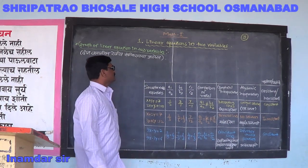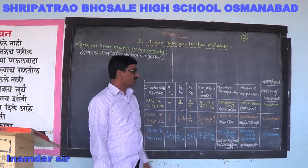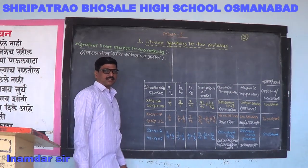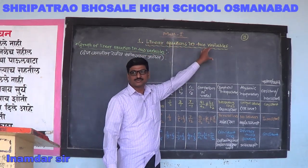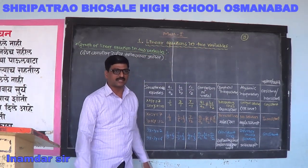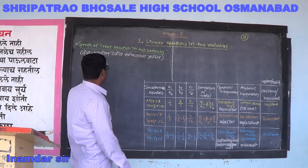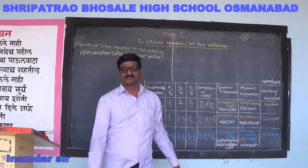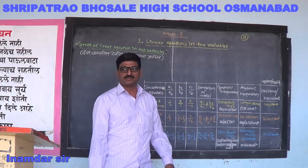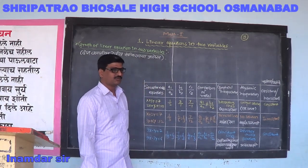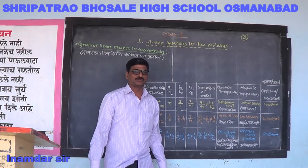So tomorrow we will see the next method, which is called the graphical method. Before that, in ninth standard we have to study one point — for one linear equation in two variables, how to draw the graph. So this point is the graph of a linear equation in two variables.